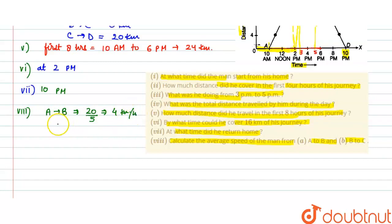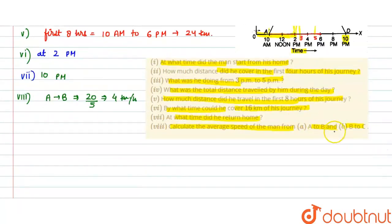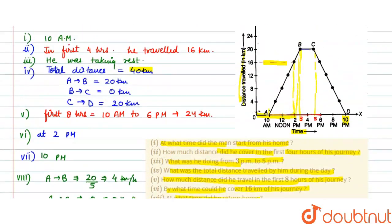Average speed from B to C: First he went A to B, B to C will be 0. The question asked A to B and B to C. So B to C had no distance traveling, so 0 by 2. How much? 0 km per hour. So these are the answers of the given question. Thank you.